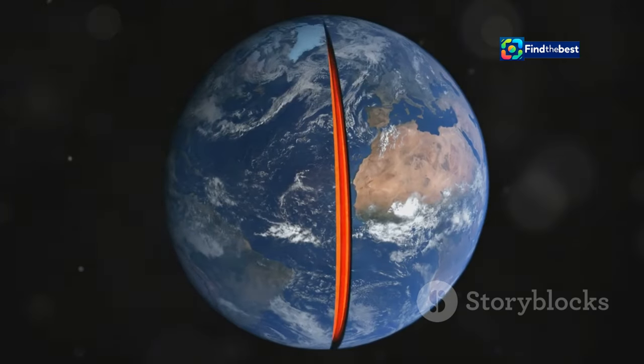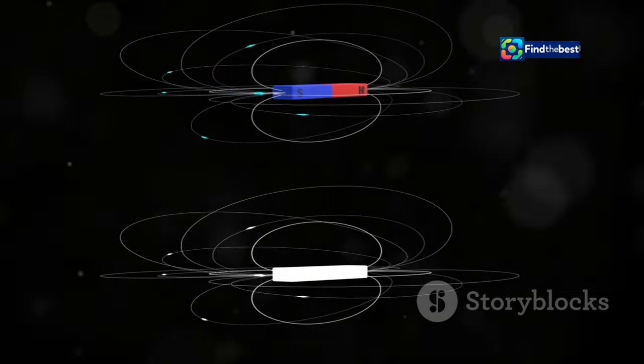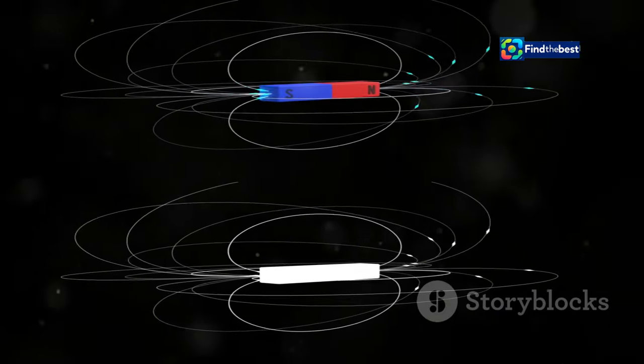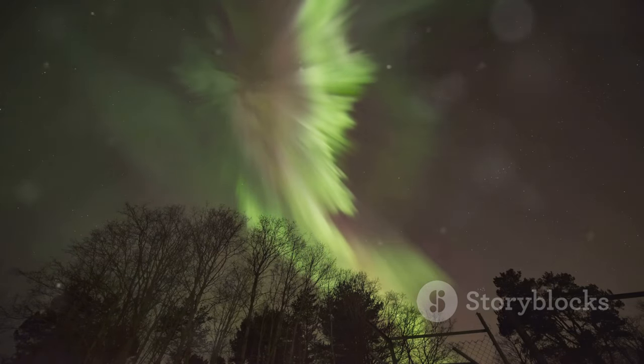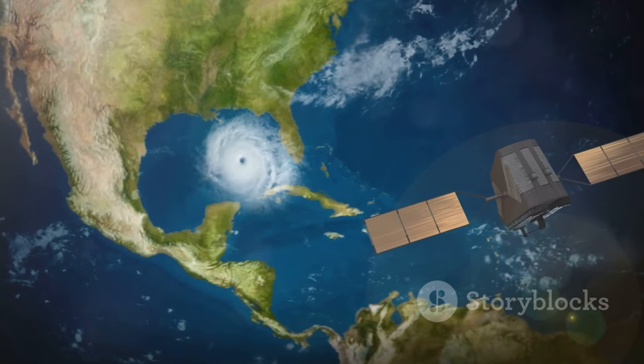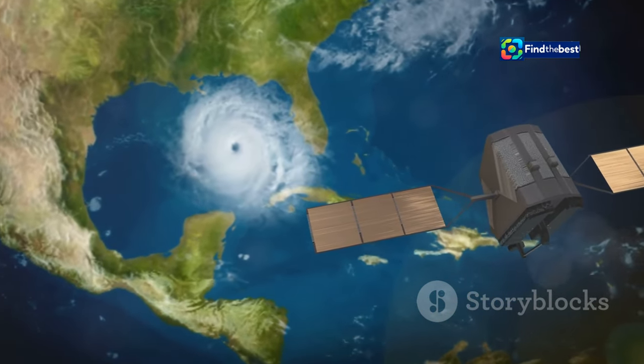The magnetic poles are created by the movement of molten iron deep inside our planet. This creates an invisible shield around Earth called the magnetic field. The magnetic field protects us from harmful radiation from the sun, acting like a giant force field deflecting most of the charged particles that constantly stream towards us.